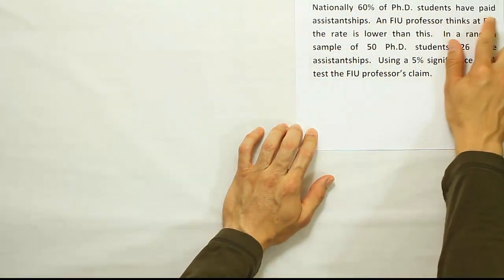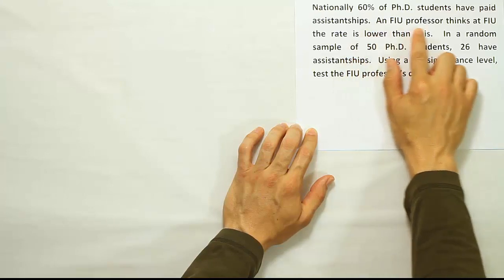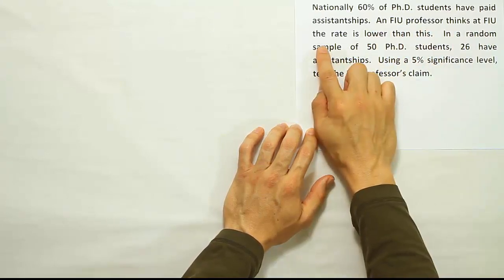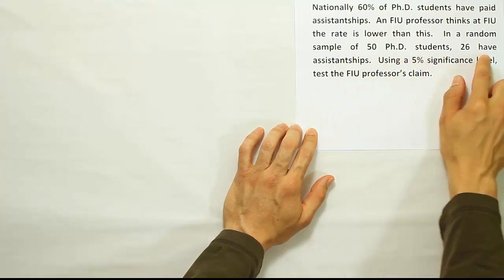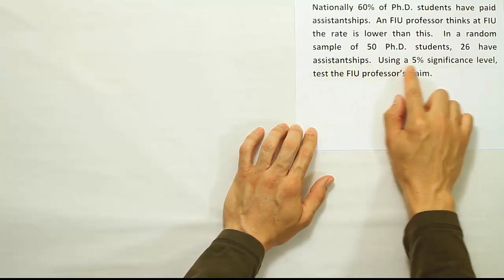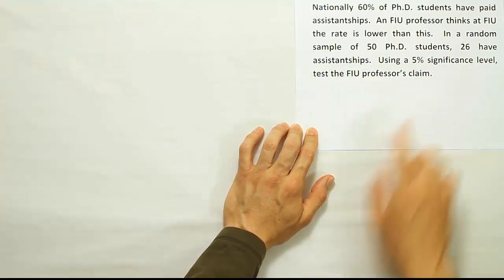Nationally, 60% of PhD students have paid assistantships. An FIU professor thinks at FIU, the rate is lower than this. In a random sample of 50 PhD students, 26 have assistantships. Use a 5% significance level to test the FIU professor's claim.